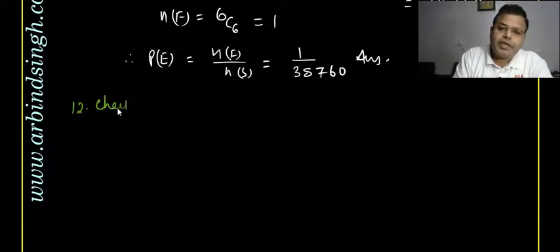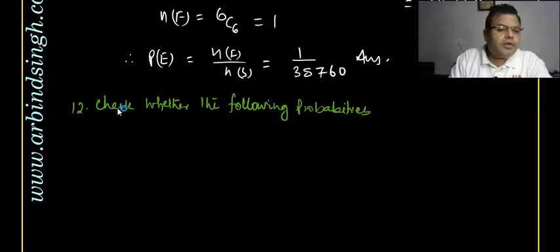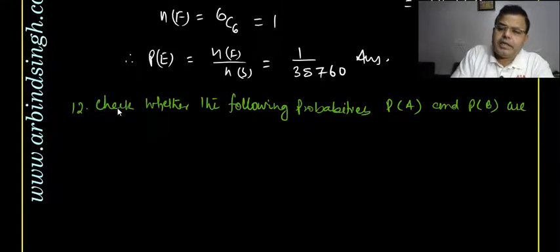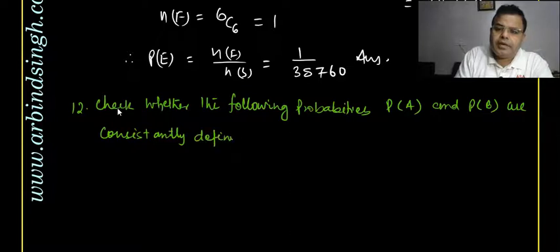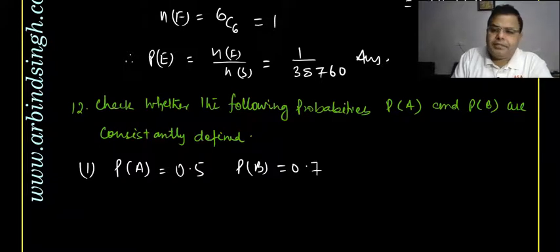Next question: check whether the following probabilities P(A) and P(B) are consistently defined. The first part gives P(A) = 0.5, P(B) = 0.7, and P(A ∩ B) = 0.6.